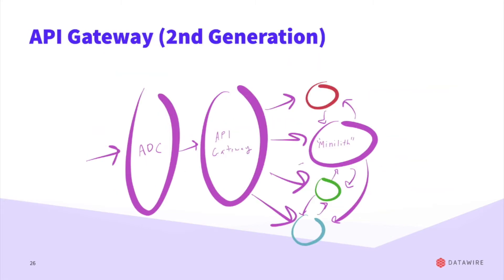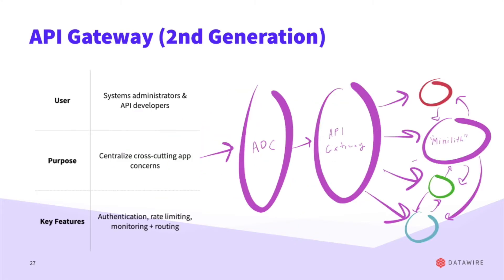This is when you see the rise of the second generation of API gateway. It takes some of the routing and cross-functional concerns away from the monolith and pulls them into a single location. The target users were sysadmins, DevOps, and API developers. You wanted to centralize cross-cutting app concerns — things like auth and rate limiting — rather than doing them in each microservice. Authentication, rate limiting, monitoring, and routing were the main features on offer with this second-gen API gateway.